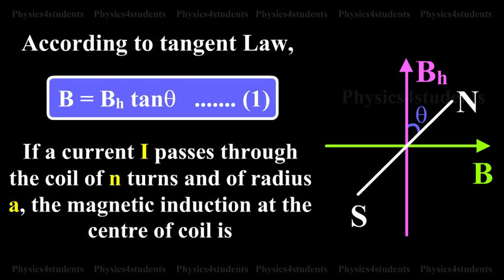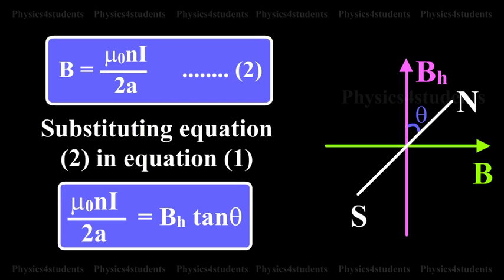If a current I passes through the coil of N turns and of radius A, the magnetic induction at the center of the coil is B equals mu naught N I by 2A. This is equation 2.